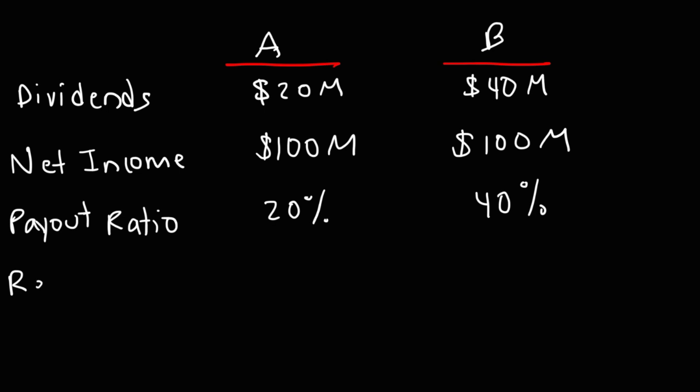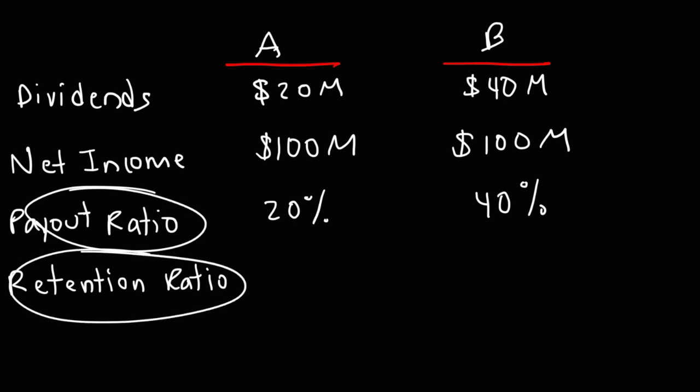Now, to calculate the retention ratio, there are two ways we can do this. The first way is to realize that these two have to add up to 100%. So, 100% minus 20% will give us 80%. Or, we could use the formula.